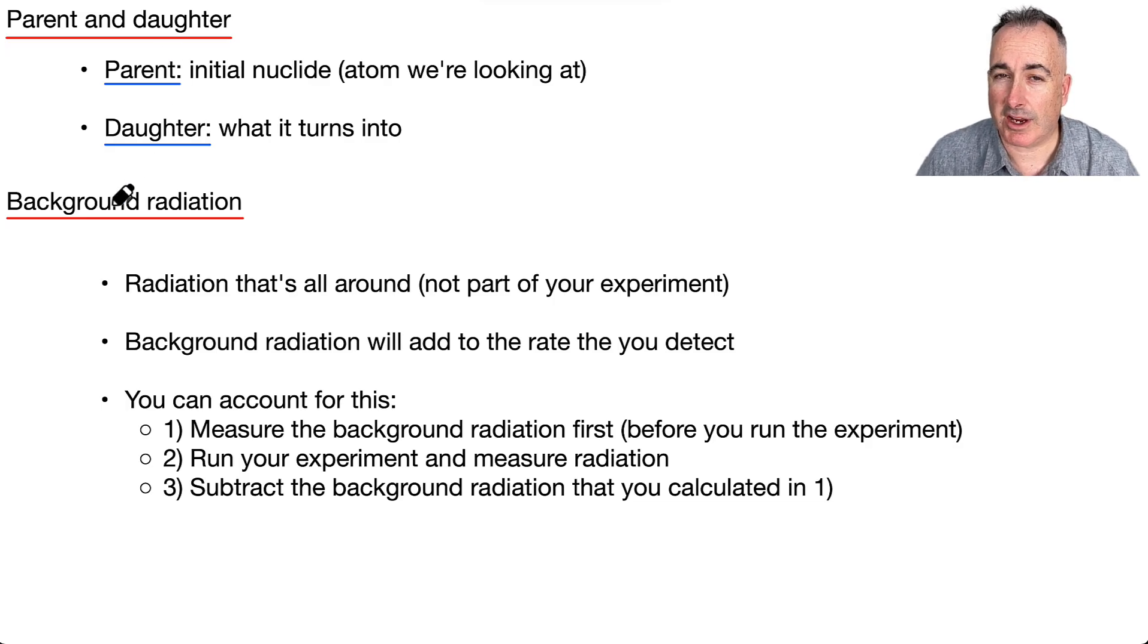Now we have something called background radiation. This is important because if you're doing an experiment, there is actually radiation due to just other stuff around you. For example, you might be near some ground that has a tiny little bit of uranium. Or you could be near a banana. A banana actually has some fraction, some small proportion of the potassium is radioactive. There's all sorts of funny things there. It's not dangerous, don't worry. It's just a matter of how much, how strong, and for how long. But background radiation, it's all around. It's not really part of your experiment.